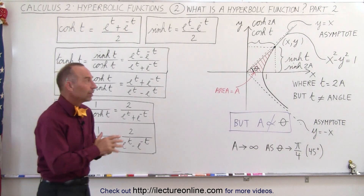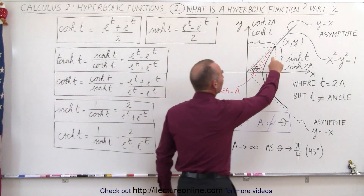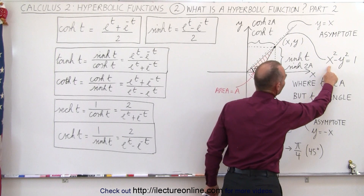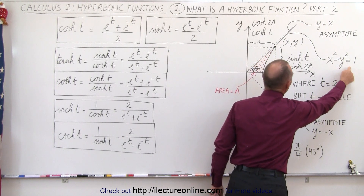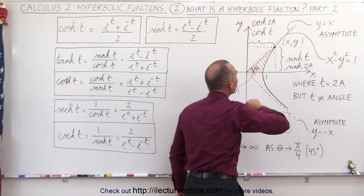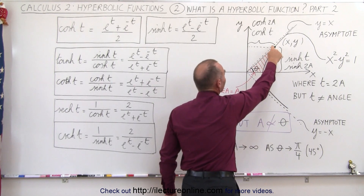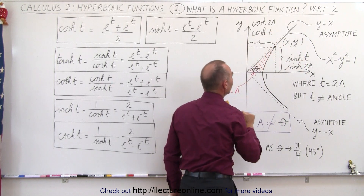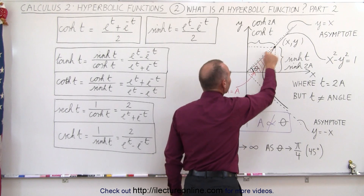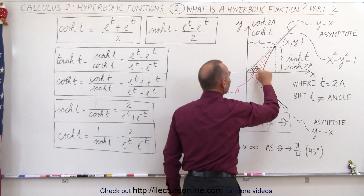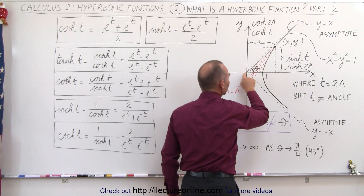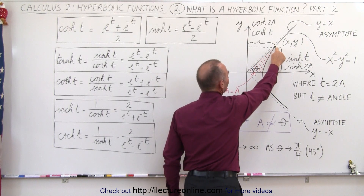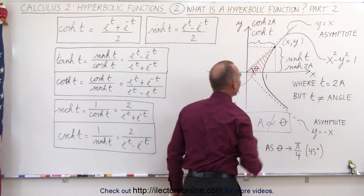Remember that the relationship between a point on the line defined by the equation x squared minus y squared equals 1 — which of course is a hyperbola — we can see that the point there can be defined by the hyperbolic sine and the hyperbolic cosine, related to the area defined by the point at the origin, the point where the line crosses the x-axis, and the point x, y on the line.